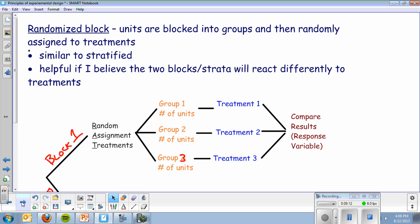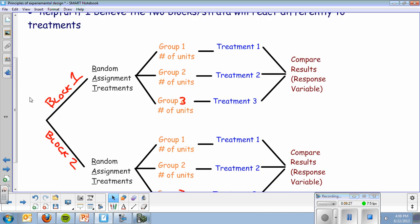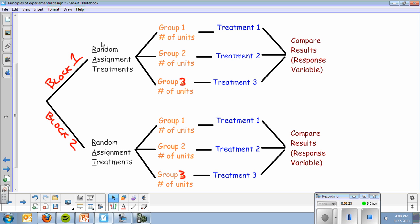The next thing would be a randomized block design. Now, with a randomized block design, it's similar to stratified. If units are blocked into groups and then randomly assigned to treatments, it's helpful if I believe the two blocks or strata will react differently. Basically, this part of it is the same, but at the beginning I'm going to separate and then run the treatments within each block. Here's what it looks like.